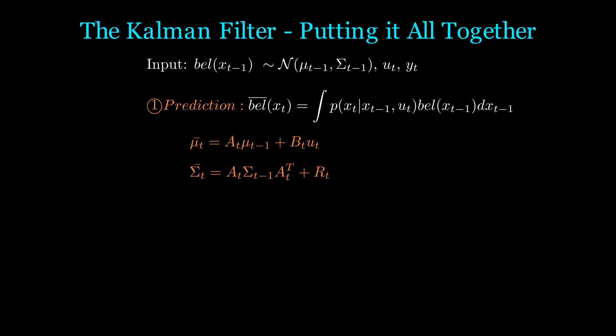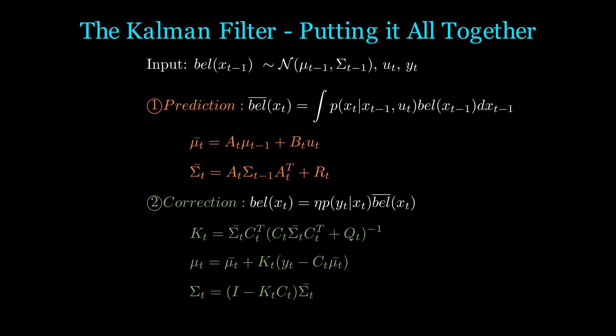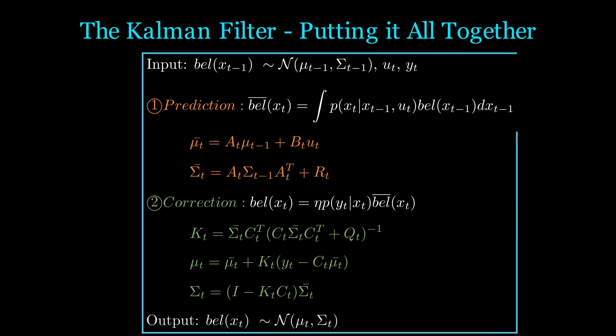Now to summarize our Kalman filter, we have as input a Gaussian belief alongside a control input ut and measurement yt. Our prediction step to compute mu bar and sigma bar are very straightforward. Then in the correction step, we first compute the Kalman gain and then correct our belief bar to output another Gaussian mu t and sigma t. And that's it. That's the derivation of the Kalman filter.